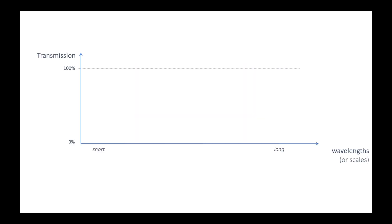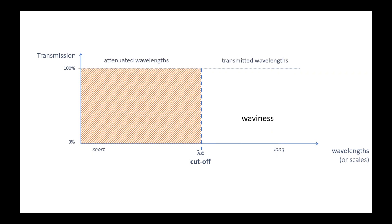If we represent the transmission of a filter according to wavelength, we have the filter cutoff which separates the transmitted wavelengths from those which are attenuated. If you want to calculate the waviness, which is made up of the longer wavelengths, you have to attenuate the shorter ones. But a filter is not a switch that cuts everything before the cutoff and transmits everything afterwards. In reality, the filters, and in particular the Gaussian filter, have a progressive transmission curve.